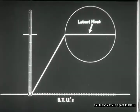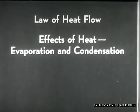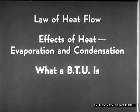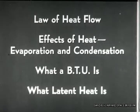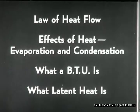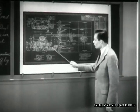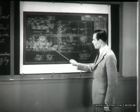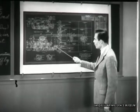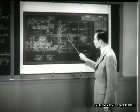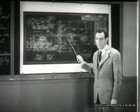Up to now, we've seen the law of heat flow, effects of heat, evaporation and condensation, what a BTU is, and what latent heat is. Now let's see if this makes our story easier to understand. Well, the liquid refrigerant, dichlorodifluoromethane, passes through the thermal expansion valve and into the evaporator, where it absorbs its latent heat of evaporation.